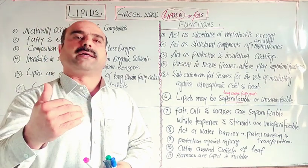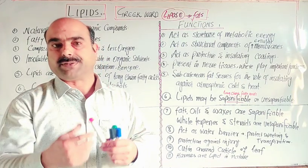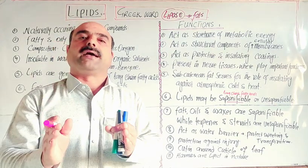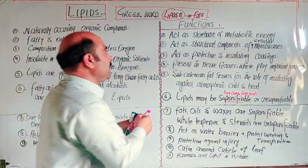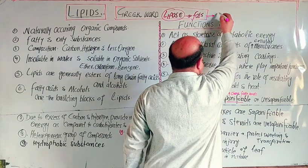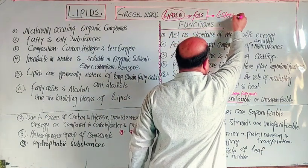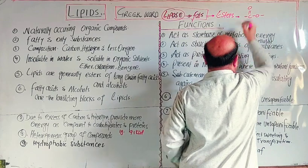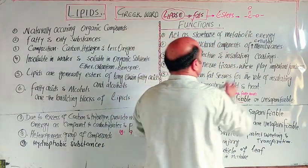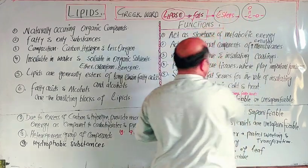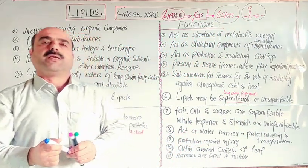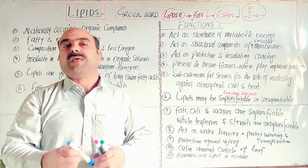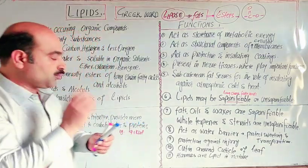Chemically, lipids are esters of long-chain carbon fatty acids. These are esters — they contain the ester functional group. Chemically, these are the esters formed from the reaction of a long-chain fatty acid with an alcohol.